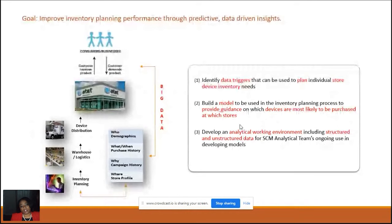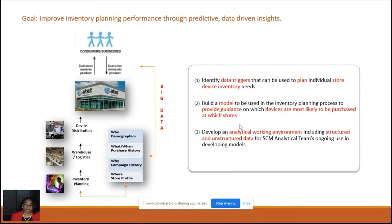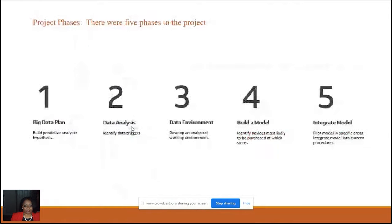A recent Gartner survey revealed 29% of surveyed organizations achieved high levels of ROI using analytics, compared with only 4% that achieved no ROI. Our goal in this use case was to improve inventory planning performance through predictive, data-driven insights: identify data triggers for individual store device inventory needs, build a model to guide which devices are most likely to be purchased at which stores, and develop an analytical working environment for supply chain staff.